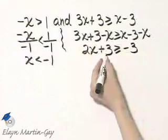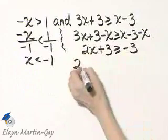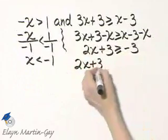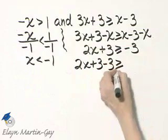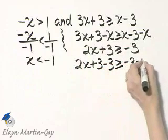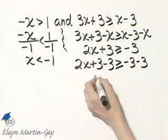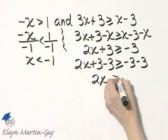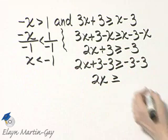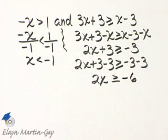And now let's subtract 3 from both sides. So I'll have 2x plus 3 minus 3 greater than or equal to negative 3 minus 3. Or, on the left side, 2x is greater than or equal to negative 3 minus 3, that's negative 6.